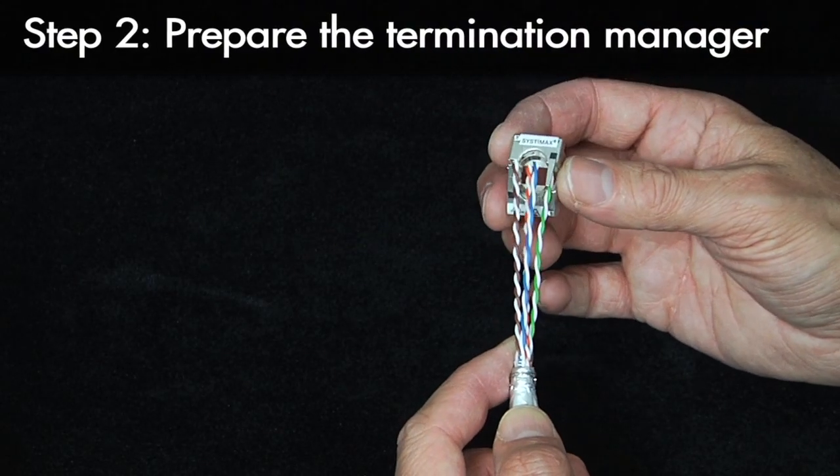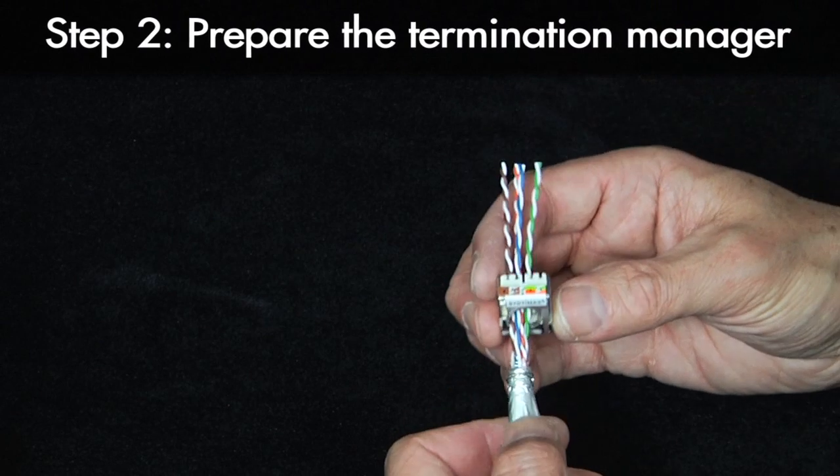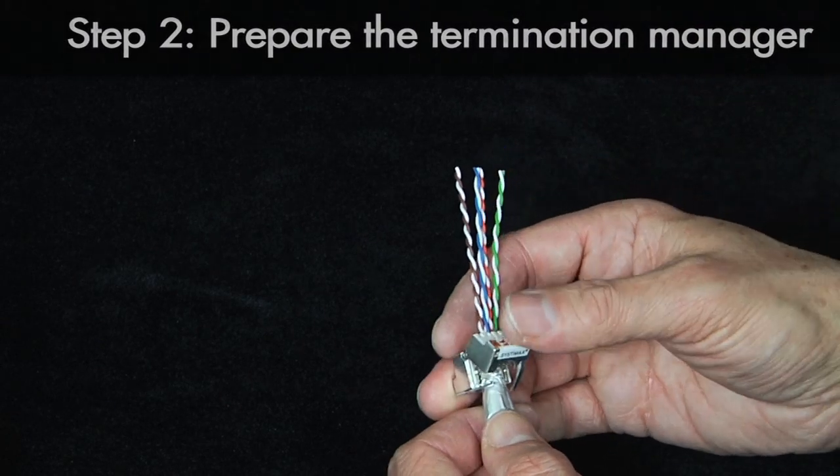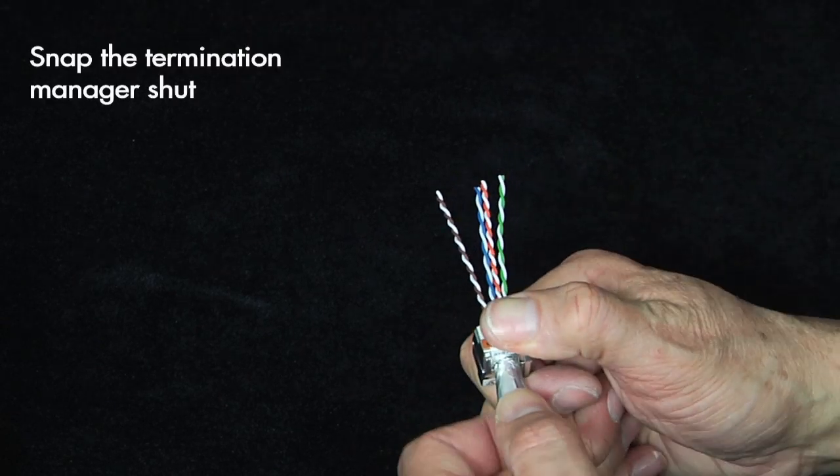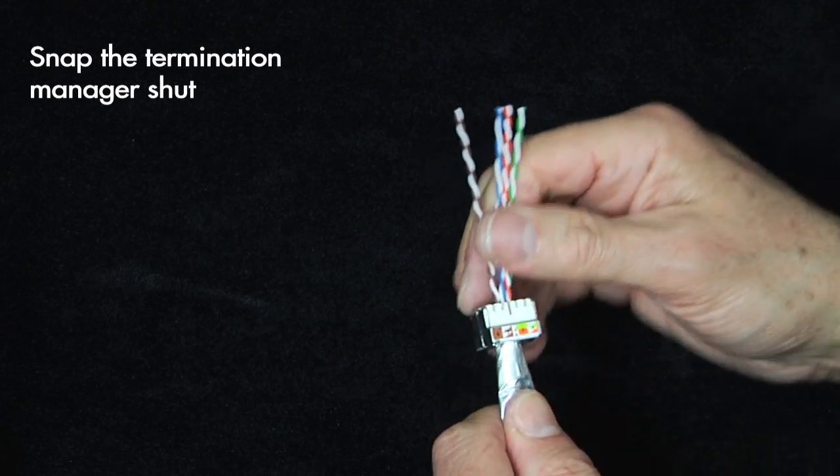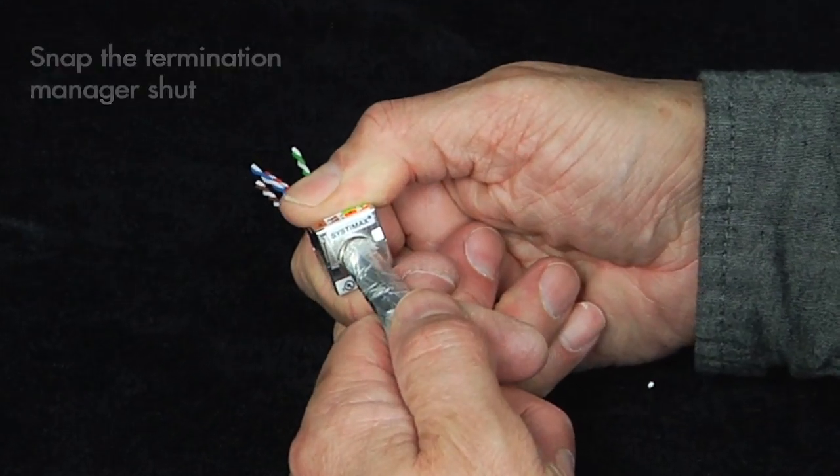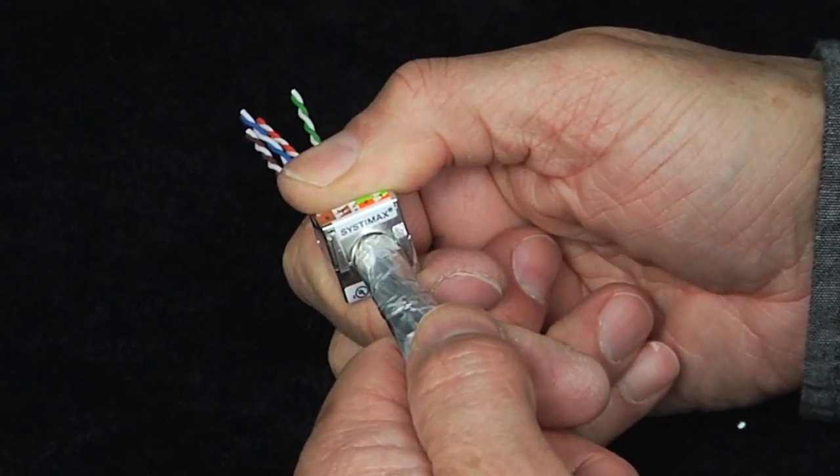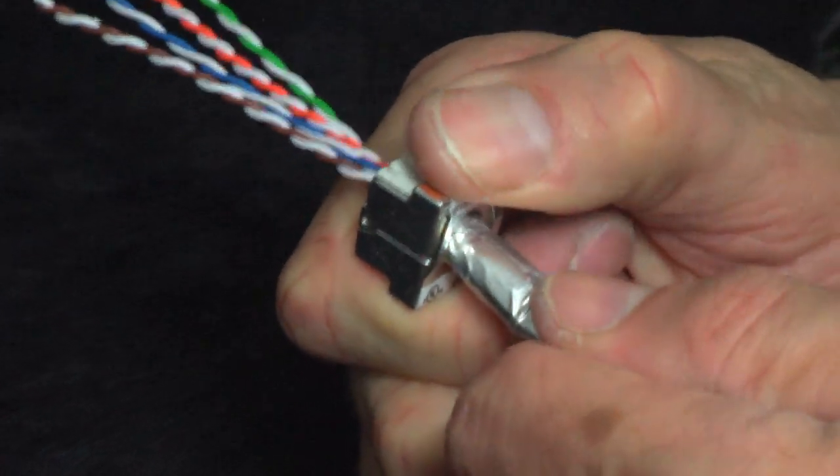Second, insert the prearranged pairs through the termination manager until the cable jacket presses up against the termination block stop. Now, snap the termination manager shut, creating a 360-degree seal over the cable drain wire and foil. You should hear a click of the latches.